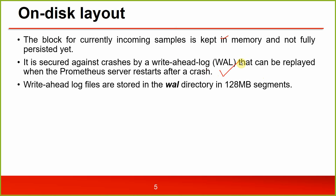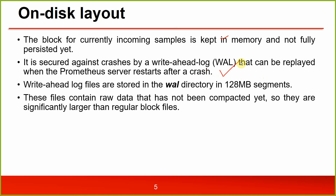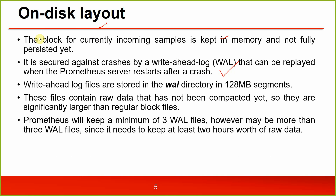WAL files are stored in 128 MB segments. These files contain raw data that has not been compacted yet, so they are significantly larger than the regular block files. Prometheus will keep a minimum of three write-ahead log files; however there may be more than three WAL files since it needs to keep at least two hours worth of raw data from the monitored metrics.